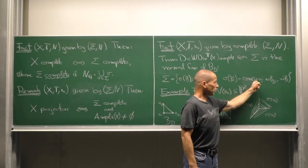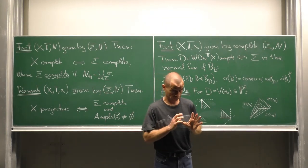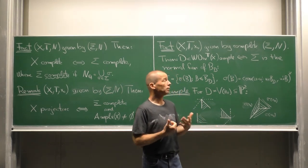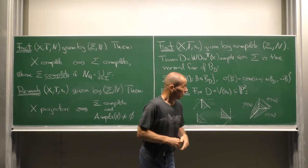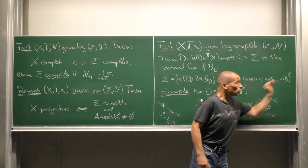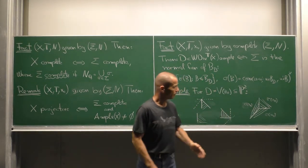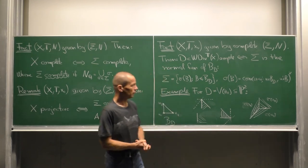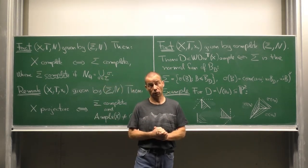Look at directions u minus u prime where u comes from the polyhedron P_D and u prime from the face B. Then we take the cone generated by these directions and dualize. This is sigma B and the collection of all this sigma B is the normal fan of P_D.